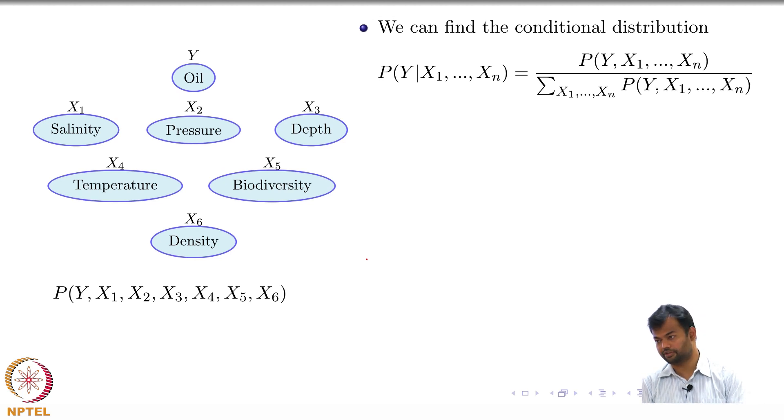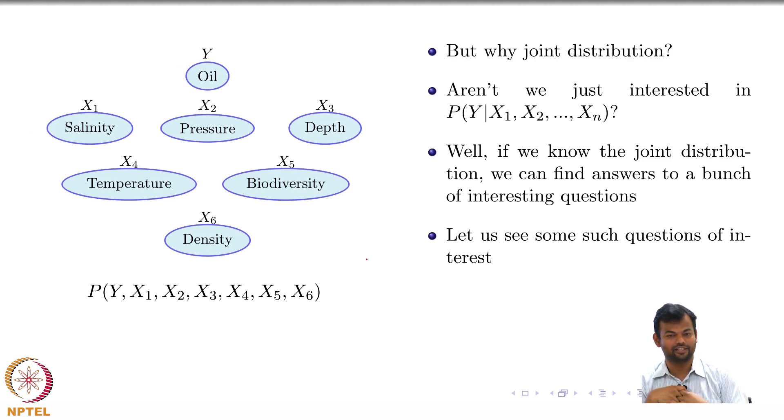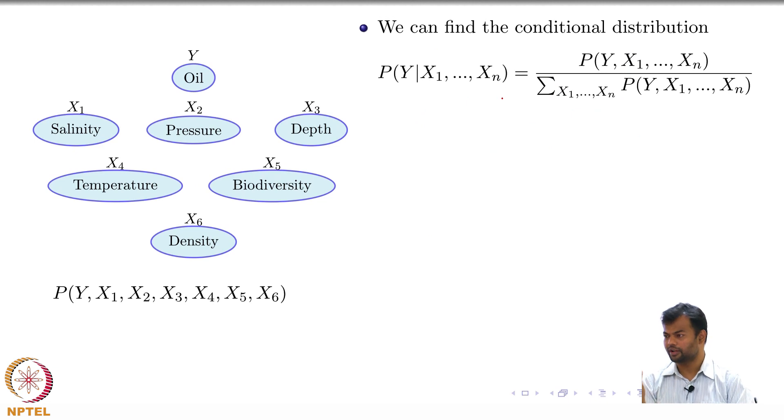One is we can find the conditional distribution. How do you get the conditional distribution from the joint distribution? Divide what by what? Basically dividing the joint by what? Marginal, right. We already saw that conditional is equal to joint by marginal. So the joint distribution is given to you, marginal is at least on paper straightforward, because you just need to sum up for all variables. Of course, I encourage you to do it on paper and see how much time it takes. So you will just get it from the joint distribution and the marginal distribution, you can get the conditional distribution.